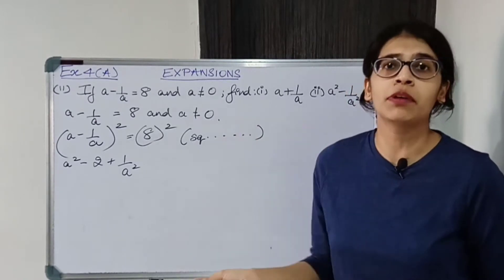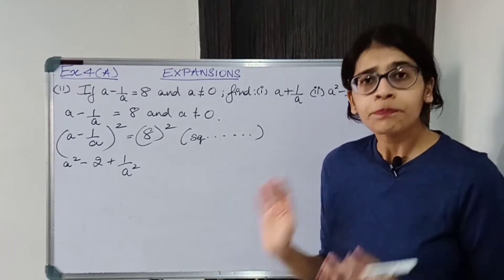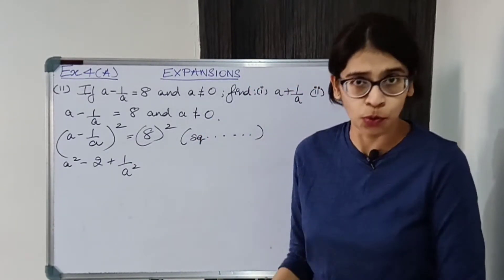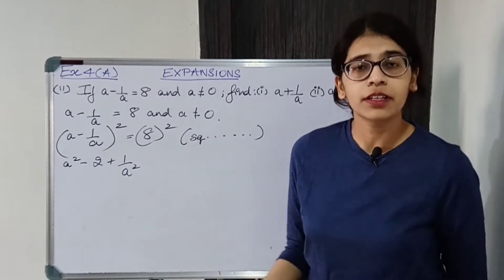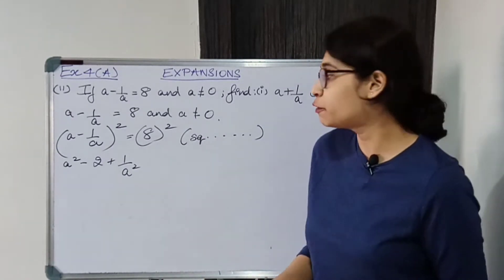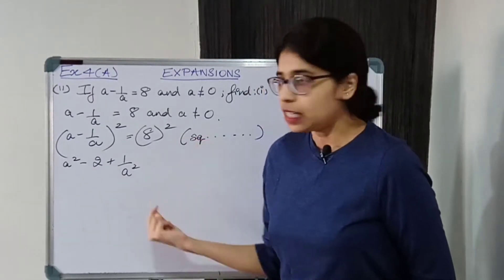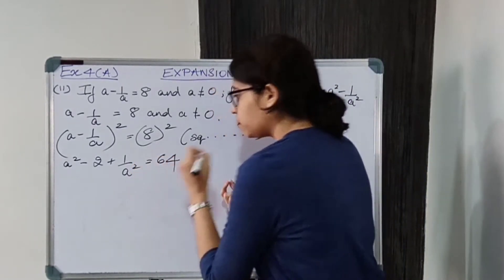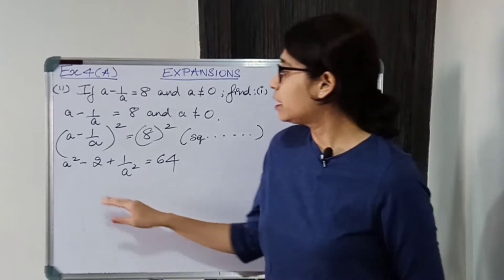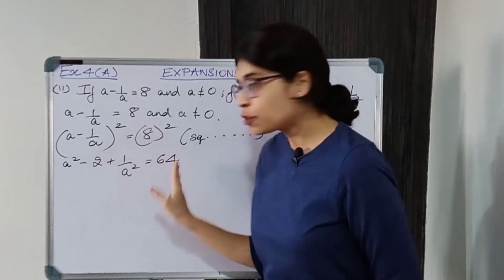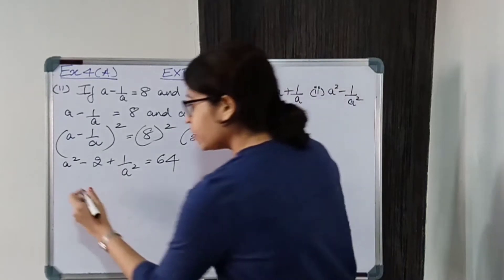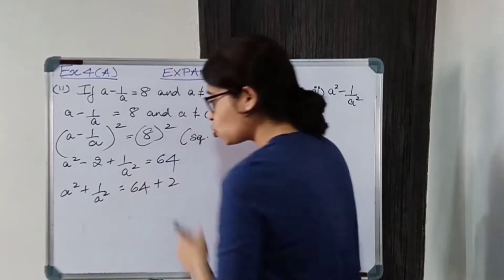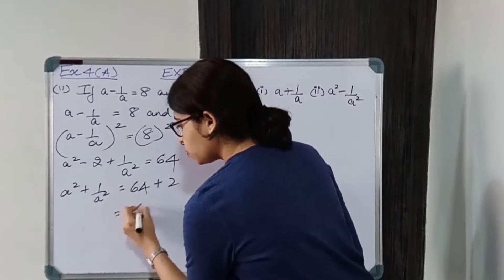There are 6 identities that I have told you to remember from the beginning when I gave you the introduction. Refer to the expansions of squares video if you don't know — I have given you the derivation and how to remember the formulae. So A square minus 2 plus 1 upon A square is equal to 64. Now we shift 2 to the other side: A square plus 1 upon A square equals 64 plus 2, which gives 66.